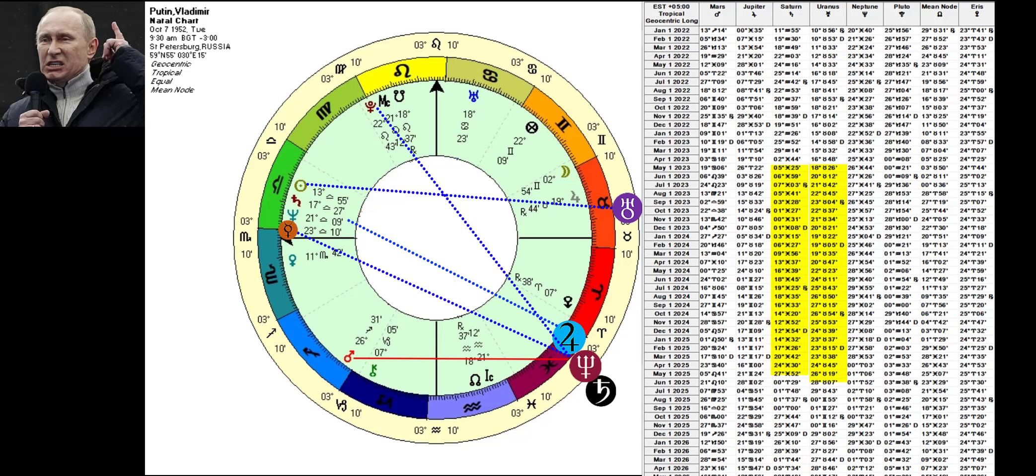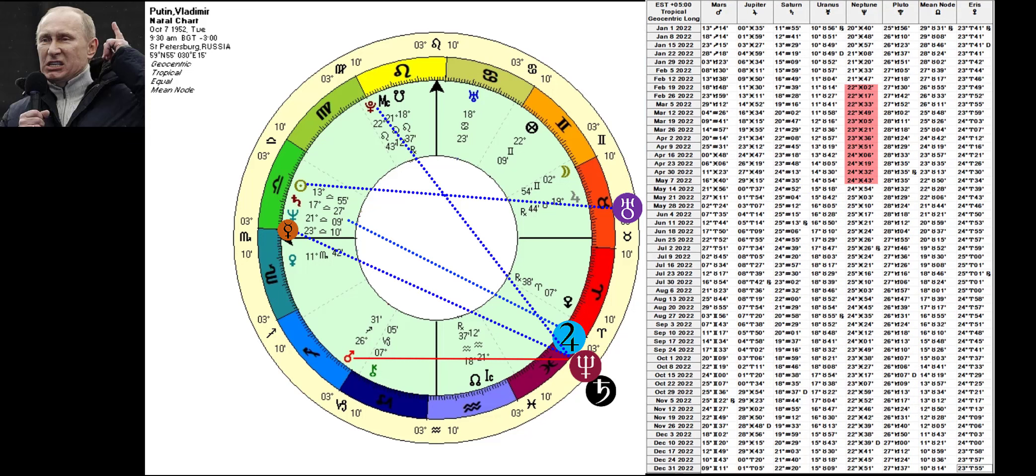But what about he himself? His Mercury, the one getting the exact Neptune quincunx work over this whole year, by the way, this aspect is building to exact and intense already in this month of March, is the ruler of his eighth sign, the sign of death, immediately attracting potentially lethal consequences for himself.